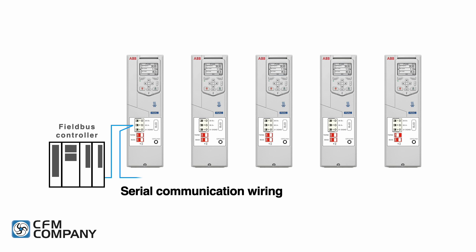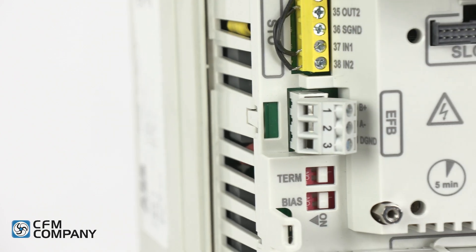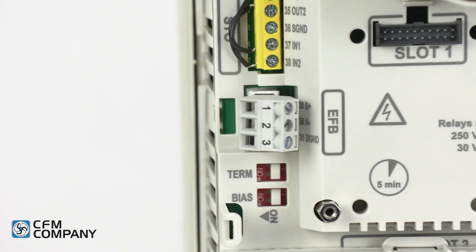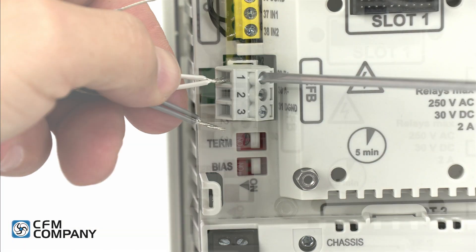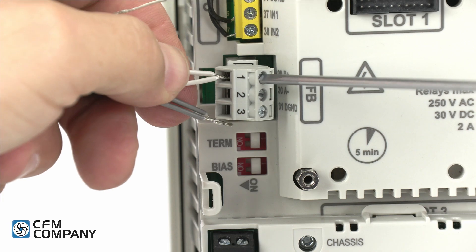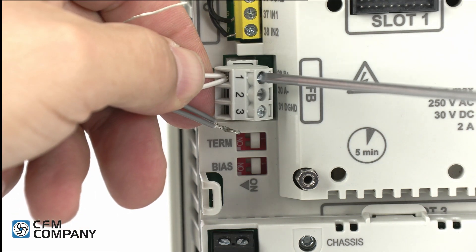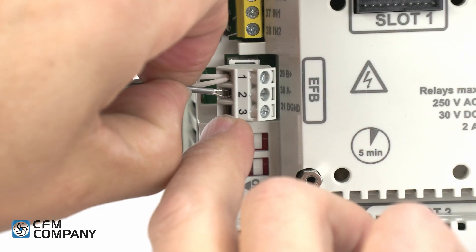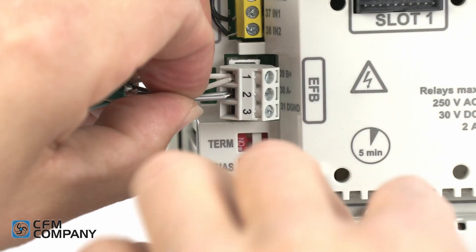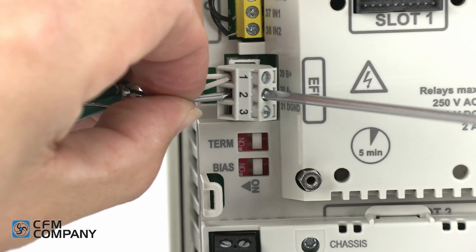If multiple devices will be connected to the network, the communication wires must be daisy chained. The serial communications wires will be landed on the removable embedded field bus terminal labeled EFB. Connect the positive network wire to terminal 29 labeled B+. In our example, this is the white wire. Connect the negative network wire to terminal 30 labeled A-. In our example, this is the black wire.